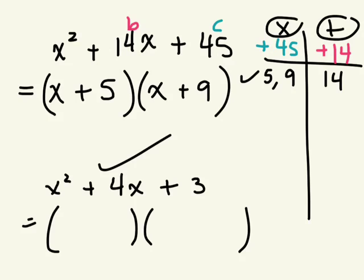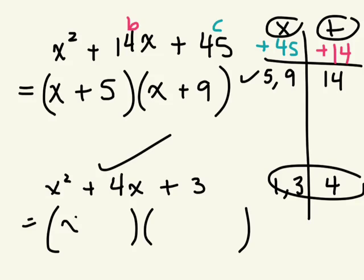This one you can do in your head because the only factors of 3 are 1 and 3. What's 1 plus 3? 4. It works. So the factored form is X plus 1 and X plus 3. Done.